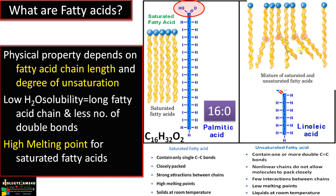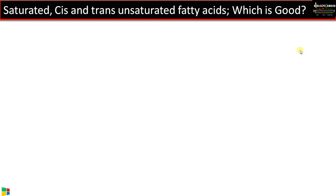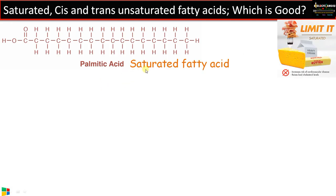There are different types of fatty acids: saturated, cis unsaturated, and trans unsaturated. Which is good for our health? First, saturated fatty acids have no double bonds — palmitic acid is an example. We should limit saturated fatty acids as they increase cardiovascular diseases and raise blood cholesterol levels. Saturated fatty acids include butter, heavy cream, and other solid fats.